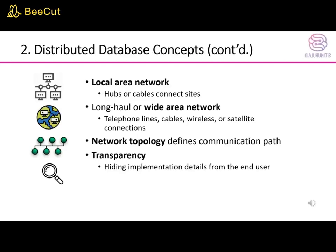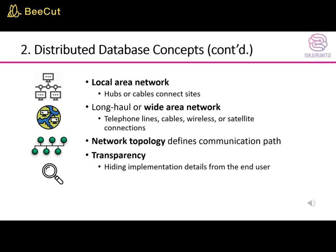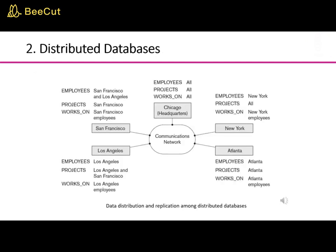There are some terms to familiarize with. A local area network uses hubs or cables to connect sites. A long haul or wide area network uses telephone lines, cables, wireless, or satellite connections. Network topology defines the communication path. Transparency refers to hiding implementation details from the end user. The diagram in the slide shows data distribution and replication among distributed databases.